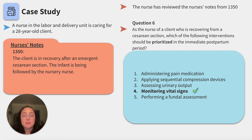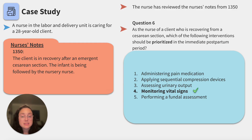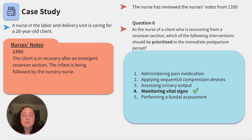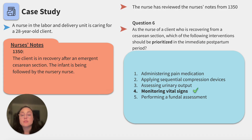Assessing urinary output is an excellent intervention for monitoring fluid balance, but would not show any immediate changes in the client's post-op condition. Performing a fundal assessment — palpation of the client's uterus — is a close second to vital signs. We assess the fundus for fundal height, its location (left, right, or midline), and tone (firm or boggy/soft). It can tell us if a client is recovering as expected or potentially hemorrhaging due to poor uterine tone. However, it would not be prioritized over the frequent assessment of vital signs in the post-cesarean section period.